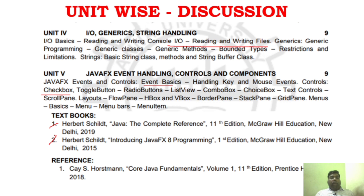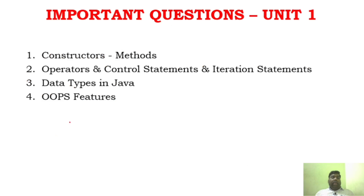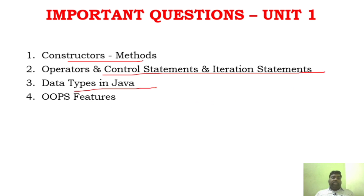Give more importance to prescribed author books. Coming to important questions: constructors, methods, control statements, iteration statements, and inheritance are very important. Data types in Java and OOP features are also key. These are the four main areas for Unit 1.